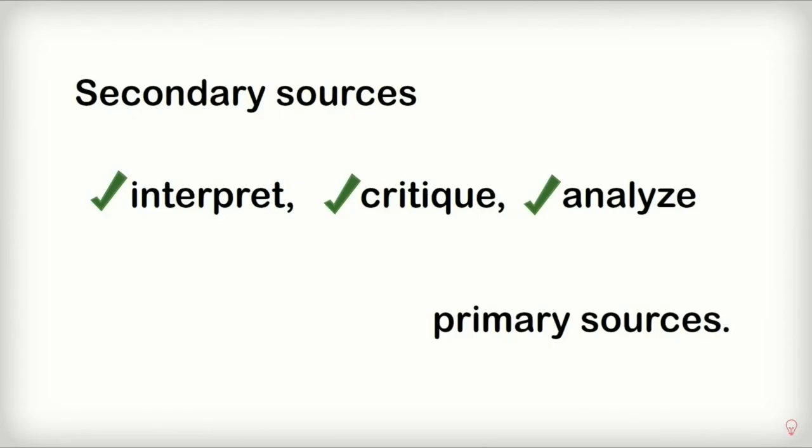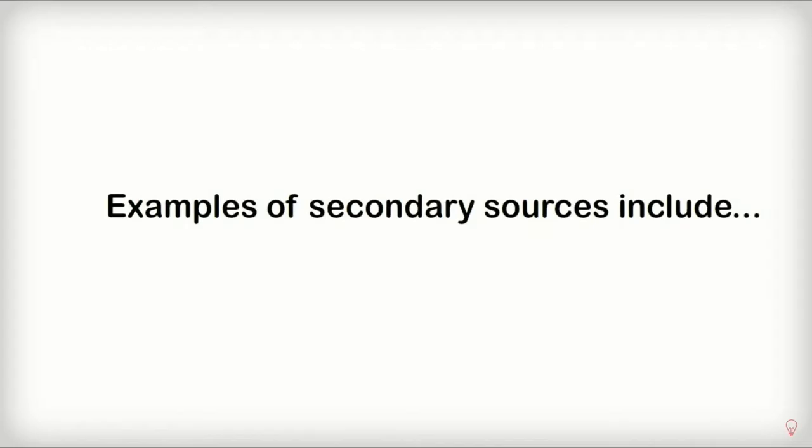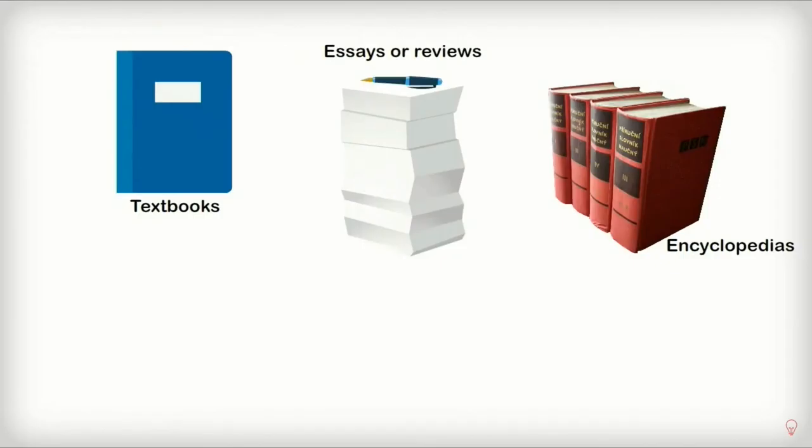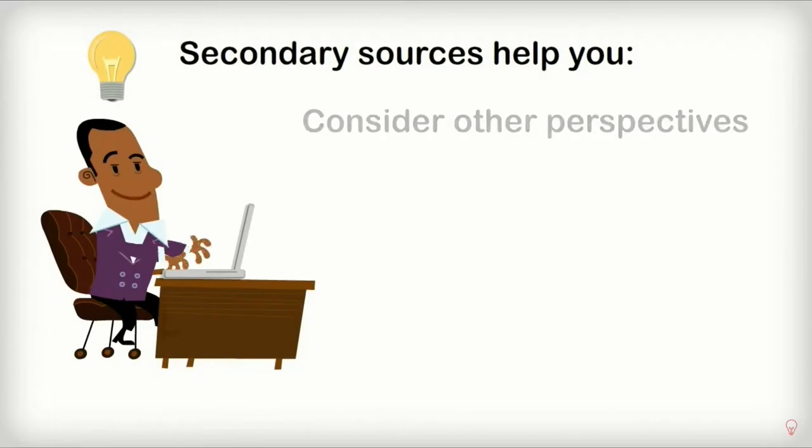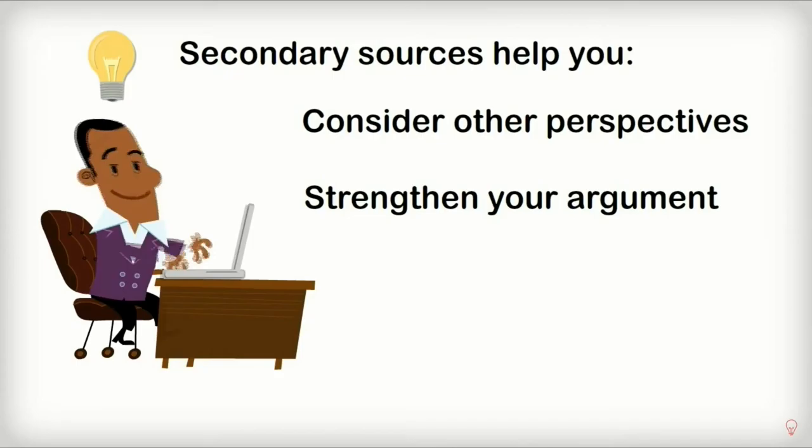Secondary sources interpret, critique, or analyze primary sources. It is information that is created or published from primary sources. Examples of secondary sources include things like textbooks, essays or reviews, encyclopedias, newspaper articles that analyze or discuss events and ideas, and criticisms and commentaries. It's a good idea to use secondary sources in research papers, because you can learn about new perspectives you may not have considered, and they can also strengthen your own argument in the assignment.